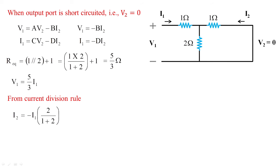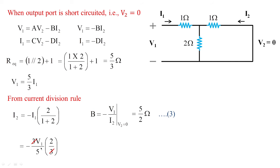For this branch the resistance is 2 ohms and the sum of the parallel value is 1 plus 2, that is 3. I1 is nothing but 3·V1/5. So I2 equals (2/5)·V1. Therefore B, which equals minus V1/I2 at V2 equals 0, has a value of 5/2 ohms — voltage over current, that's why the unit is ohms. Similarly, D equals minus I1/I2 at V2 equals 0, whose value is 3/2 — this is dimensionless since it is a gain component, not in ohms.